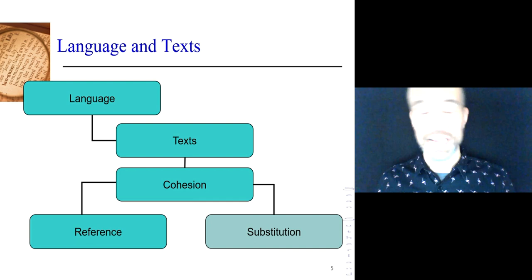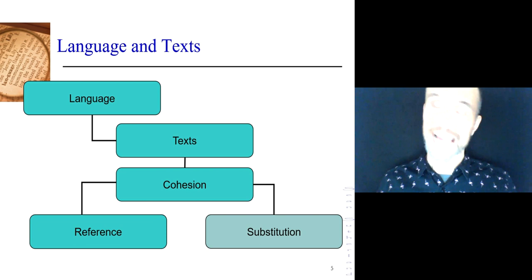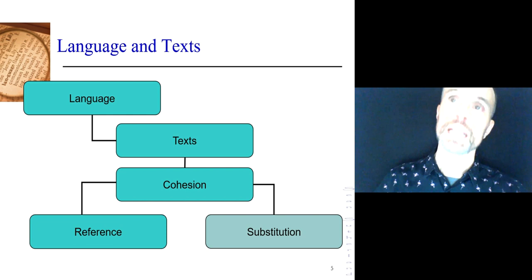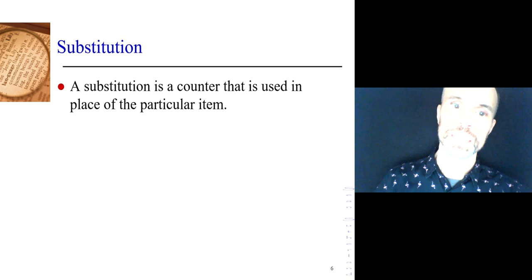Substitution is another kind of cohesive relation, so it fits in like this. It's different. It has many things in common with reference — you can still use words like anaphoric, cataphoric, presupposition, and so on. But it has enough differences that it's a separate category of cohesive relation. By the time you're finished this series of lectures and seminars, you will know about five types of cohesive relation. The second one today is substitution.